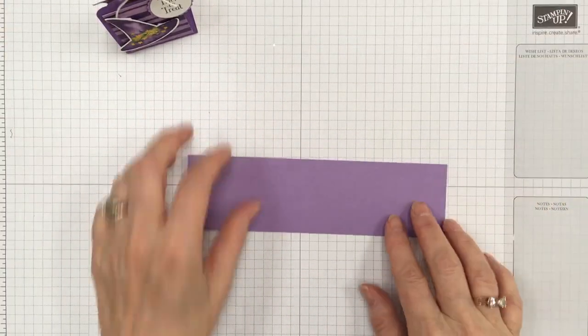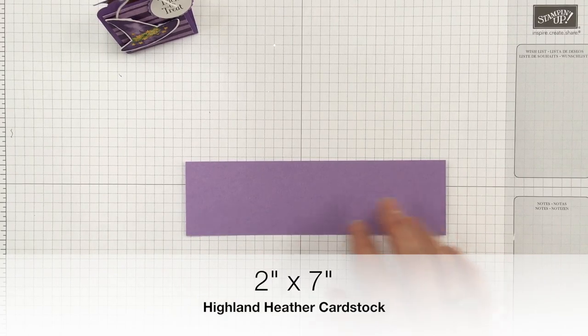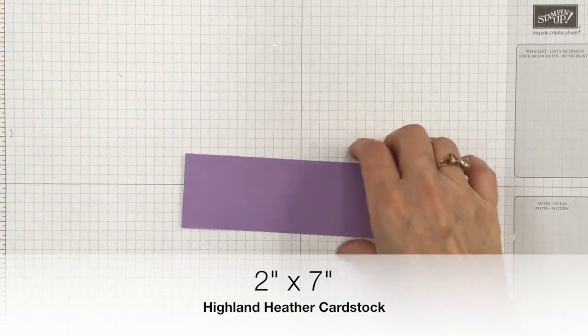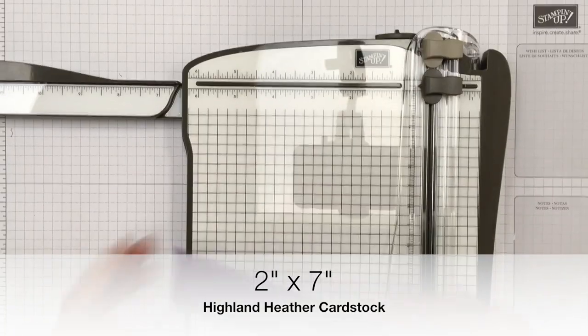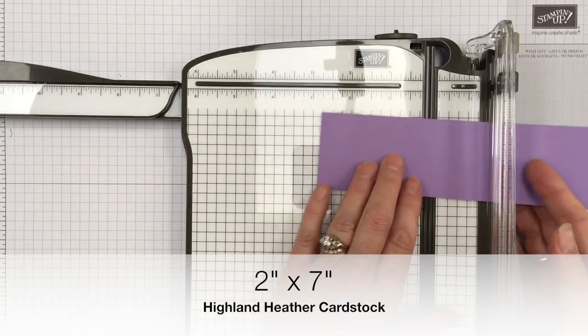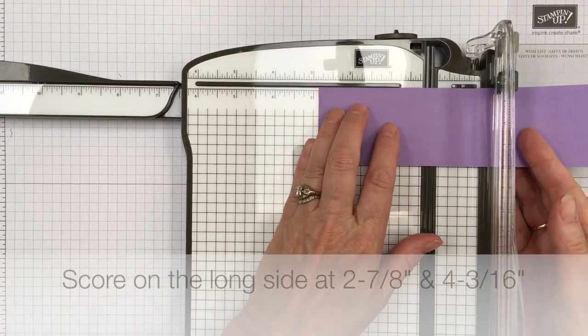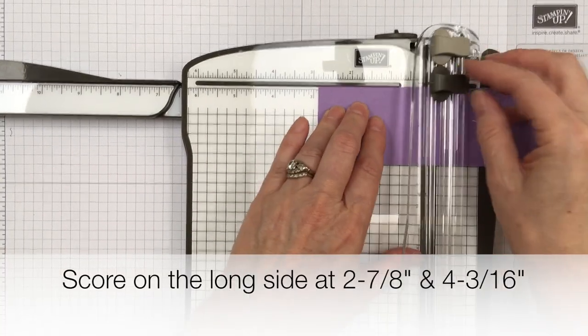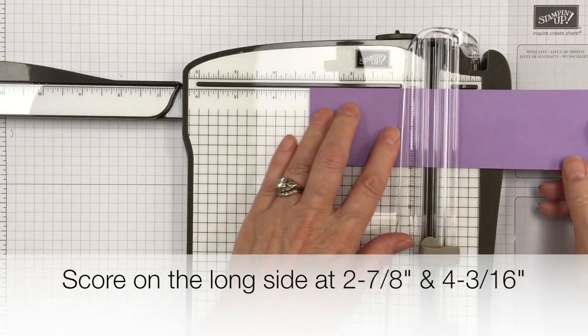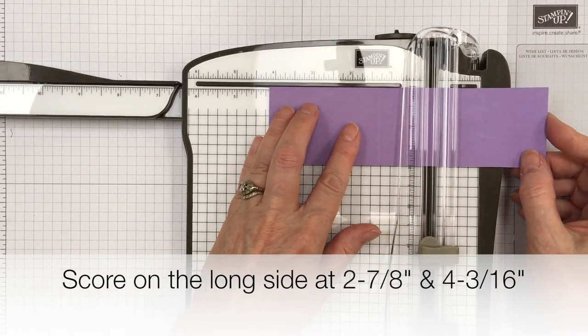So you're going to need a piece that measures two inches by seven inches and then we'll do a little bit of scoring. We're going to score this piece at two and seven eighths. Oops got to get that cutter out. Two and seven eighths and four and three sixteenths.